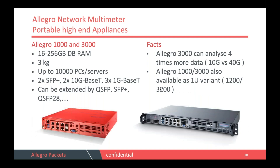The larger units go up to 40 gig for the Allegro 3000 and 10 gig for the 1000, offering very large database memory — up to 512 gigabytes with the newest DRAM modules currently being tested. These units offer more connection options: 10 gig, 40 gig, and even 100 gig ports are available for physical connectivity.